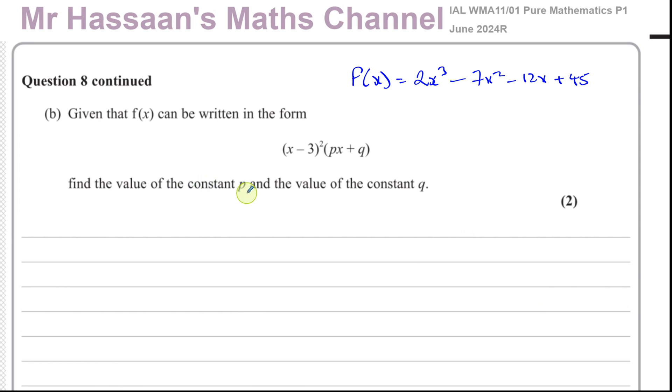Now for part B of this question. We're told that given that f(x) can be written in this form: (x - 3)²(px + q), find the value of the constant p and the value of the constant q. So basically f(x) which we worked out to be 2x³ - 7x² - 12x + 45 can be written in this form (x - 3)²(px + q). We've got to find the value of p and q.